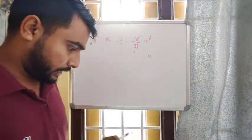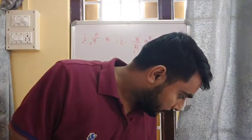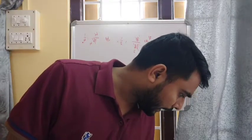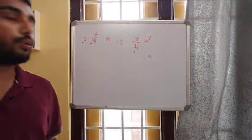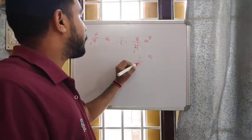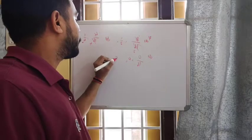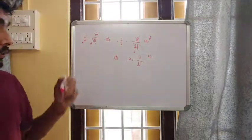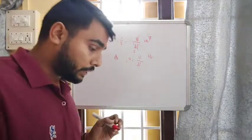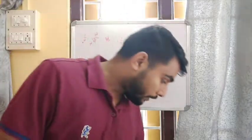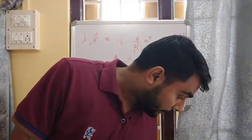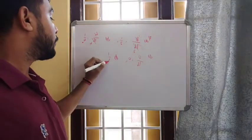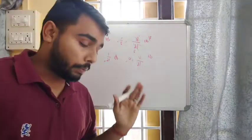For number C, winning rupees six: there is no sector with rupees six, so the number of favorable outcomes is zero. Probability is zero by 16, which equals zero. For number D, winning rupees ten: only one sector has rupees ten, so the probability is one by 16.